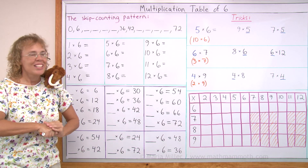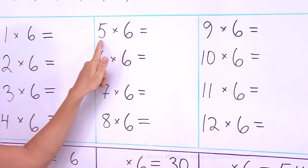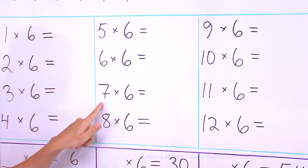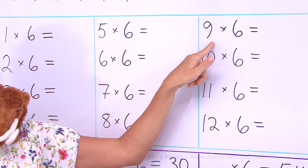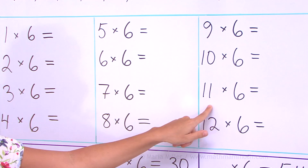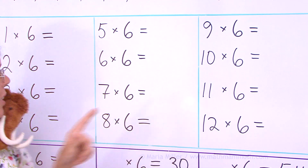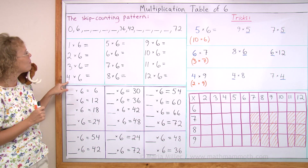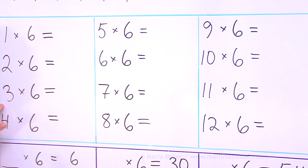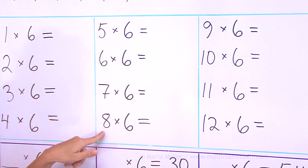And now let's start practicing and drilling. I will point to the problems and you try to answer as fast as you can. 5 times 6 — 30. 7 times 6 — 42. 9 times 6 — 54. 11 times 6 — 66. 12 times 6 — 72. 4 times 6 — this you should know from the table of 4 — 24. 3 times 6 — 18. 6 times 6, the one that rhymes — 36. 8 times 6 — 48.